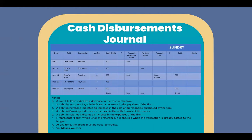In the cash disbursement journal, a credit in cash indicates a decrease in the firm's cash; a debit in accounts payable indicates a decrease in payables; a debit in purchases indicates an increase in the cost of merchandise purchased; a debit in drawings indicates an increase in the withdrawals of the owner; and a debit in salaries indicates an increase in the expenses of the firm. The F column represents folio for reference and is checked when the transaction is already posted to the ledgers. At all times, debits must be equal to credits.